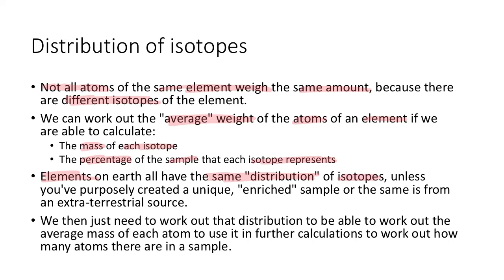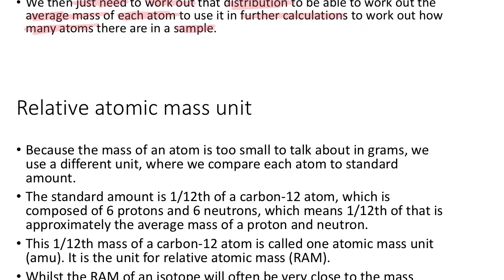So we just need to work out the distribution of the isotopes to find the average mass of each atom, as well as how much each atom weighs, to use in further calculations to work out how many atoms there are in a particular sample. How many atoms are in a sample depends on how many different isotopes you have, what percentage they are, and how much they each weigh.